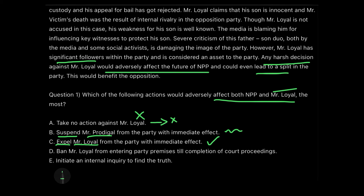Option D says 'ban Mr. Loyal from entering the party premises till the completion of the court proceedings.' This also directly affects Mr. Loyal and would obviously affect the party. But why is Option D not as strong as Option C? Because Option D talks about banning him only until completion of the court proceedings — this is a temporary action. Once court proceedings are complete, the ban can be lifted. Option C, expelling a person from the party, sounds like a permanent action. That's why Option D does not stand as strong as Option C.